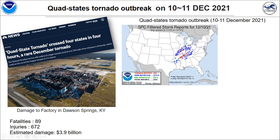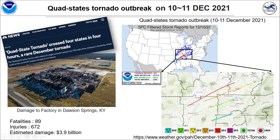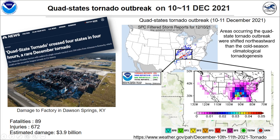But last December, we had a terrible disaster, as we call the quad-state tornado outbreak. As shown in the news articles, many facilities and properties were lost during just two days. During this event, we had 89 fatalities, 672 injuries, and 3.9 billion dollars in estimated damages.